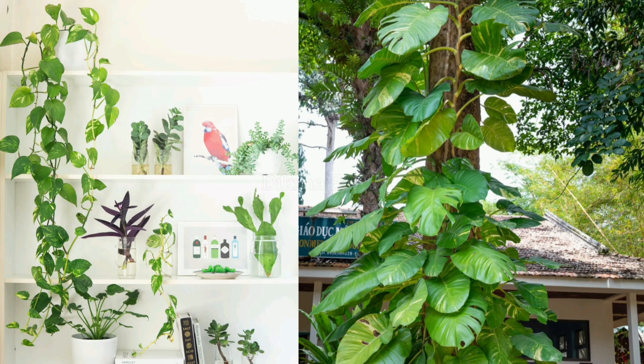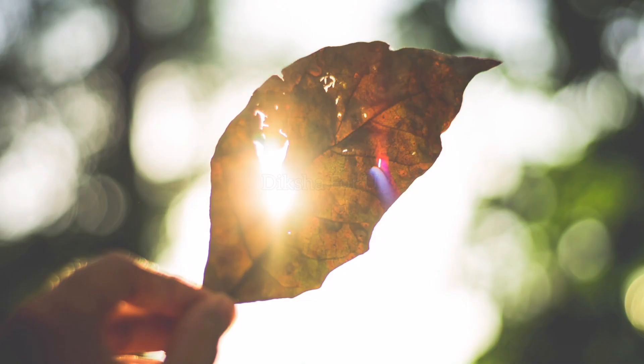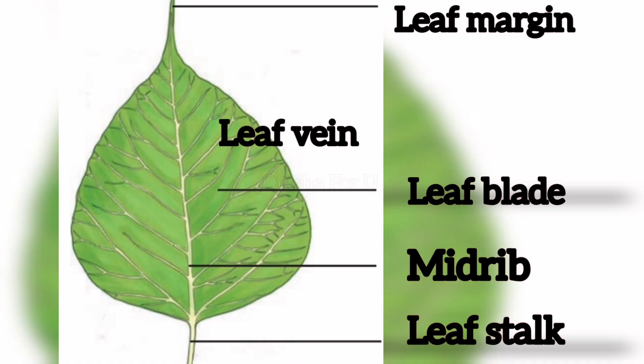Climbers have weak stem but they grow upright with support. Next is leaf. The parts of leaf are leaf margin, leaf vein, midrib, leaf stalk, and leaf blade.